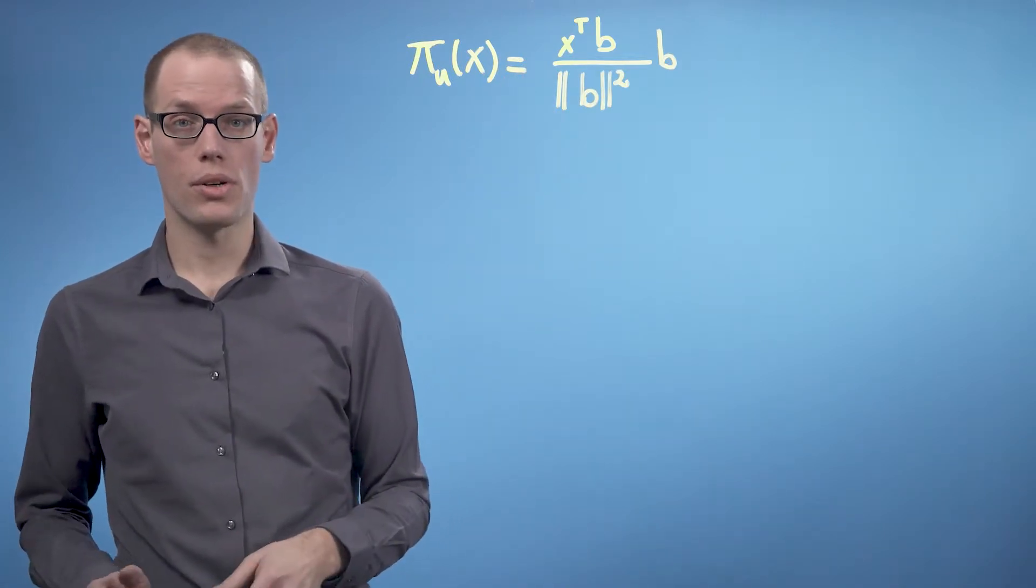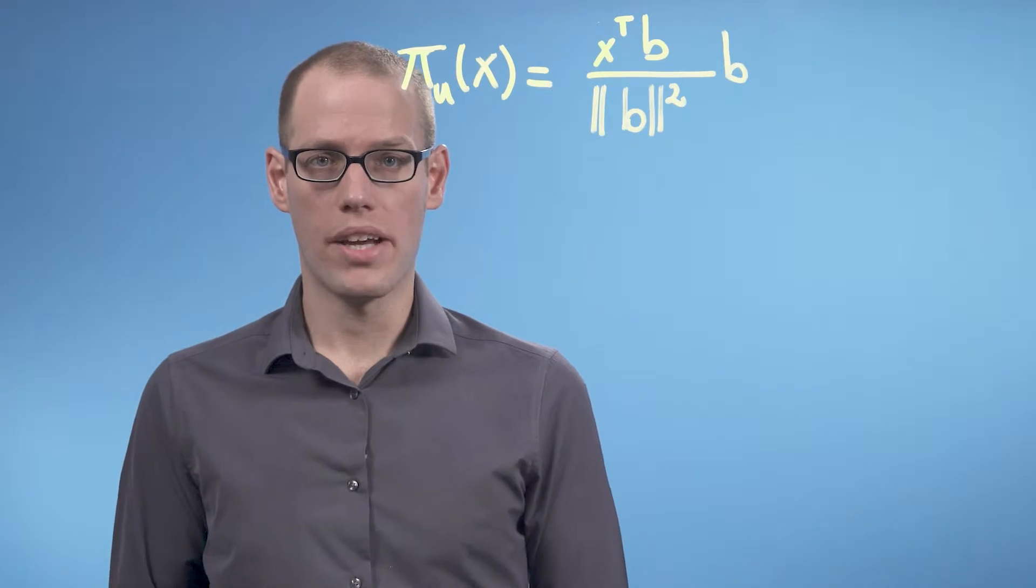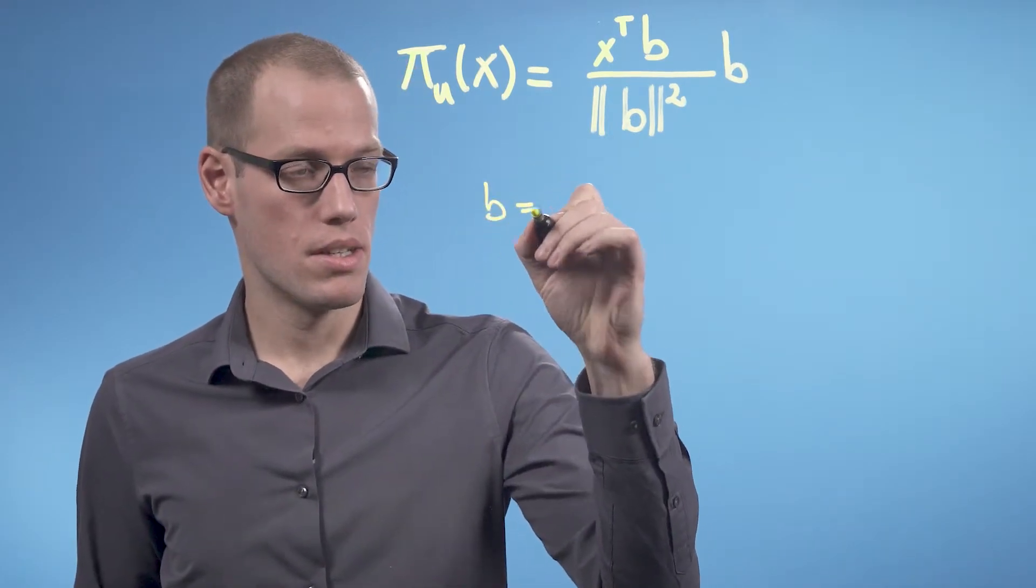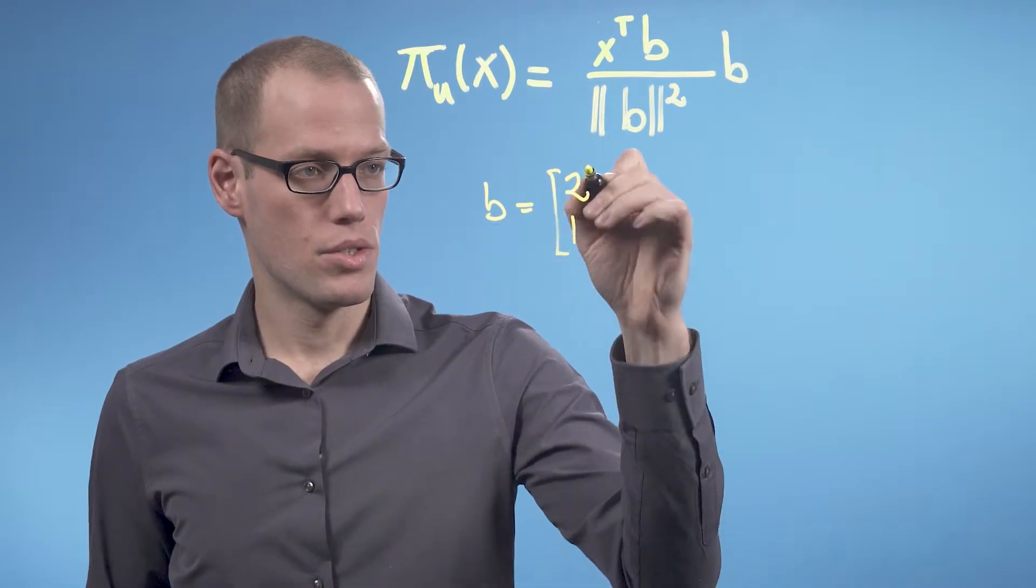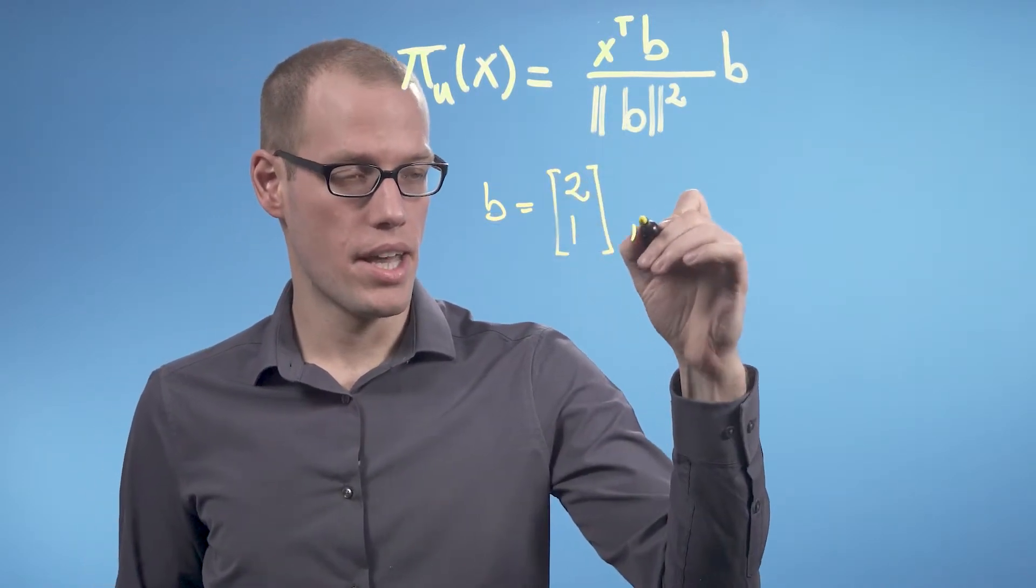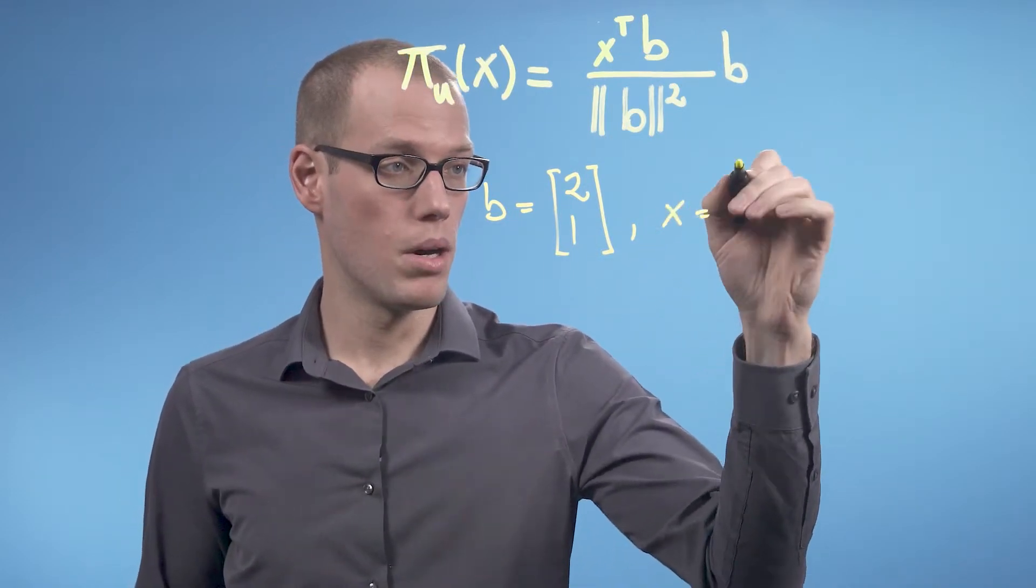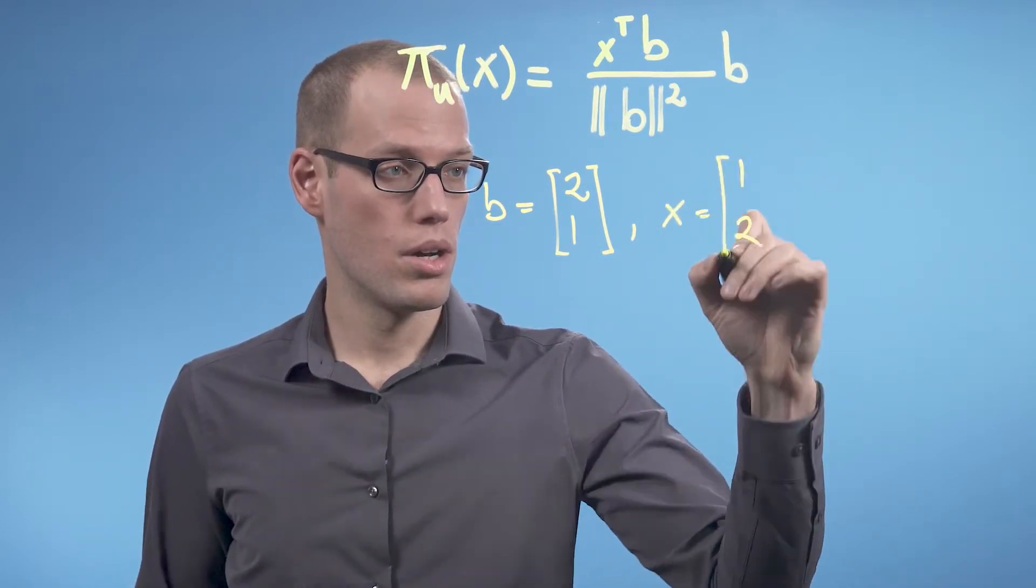In this video, we are going to look at an example. Assume our vector b that spans our one-dimensional subspace is the vector [2,1], and the vector x we want to project onto that subspace is given by [1,2].